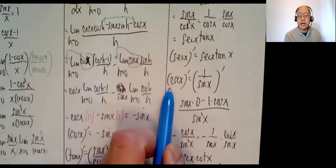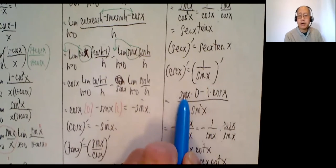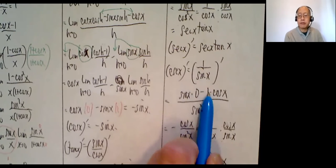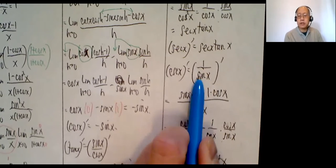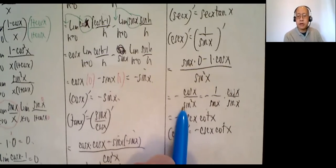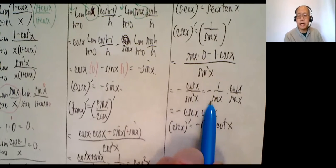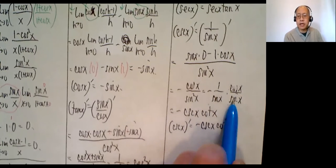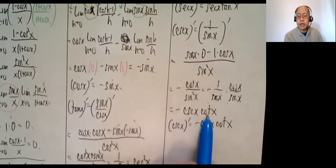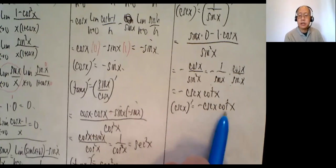Cosecant is 1 over sine x. Quotient rule: bottom times derivative of the top — that's 0 — minus 1 times the derivative of sine, which is cosine x, over sine squared x. So negative cosine x over sine squared x. Breaking it up: negative 1 over sine x times cosine x over sine x equals negative cosecant x cotangent x. Derivative of cosecant x is negative cosecant x cotangent x.